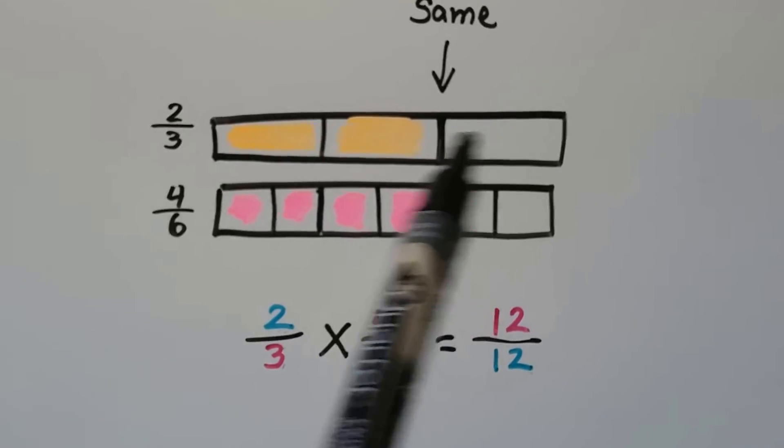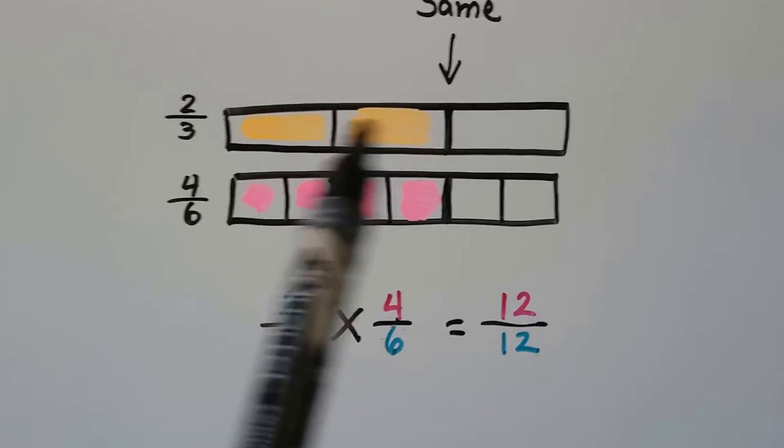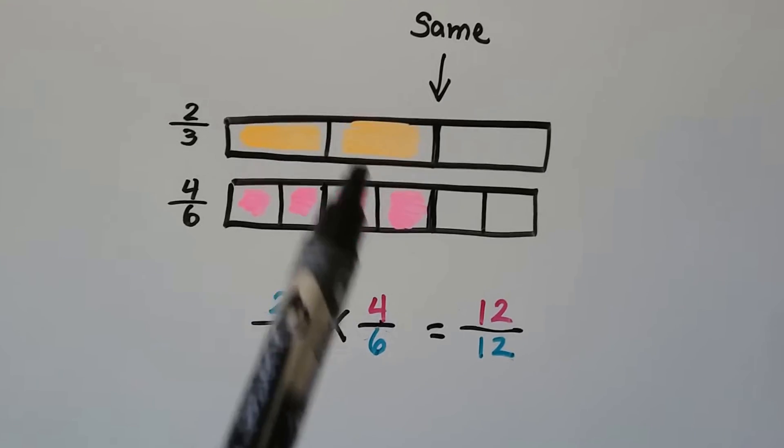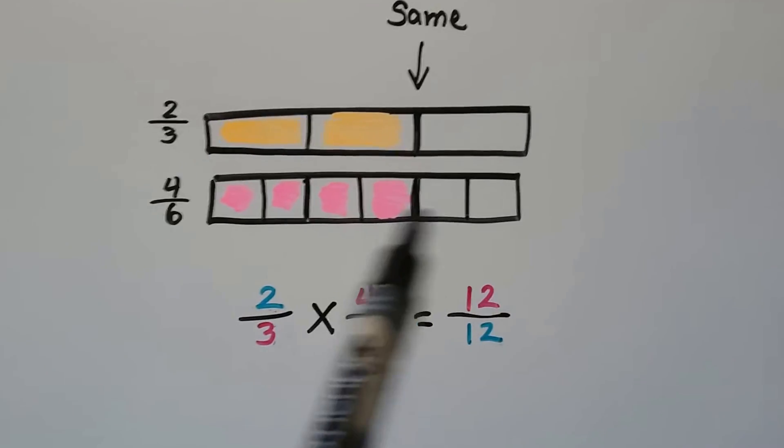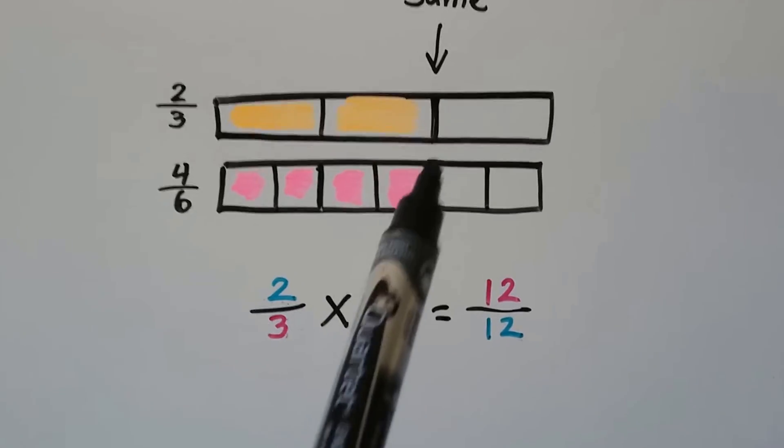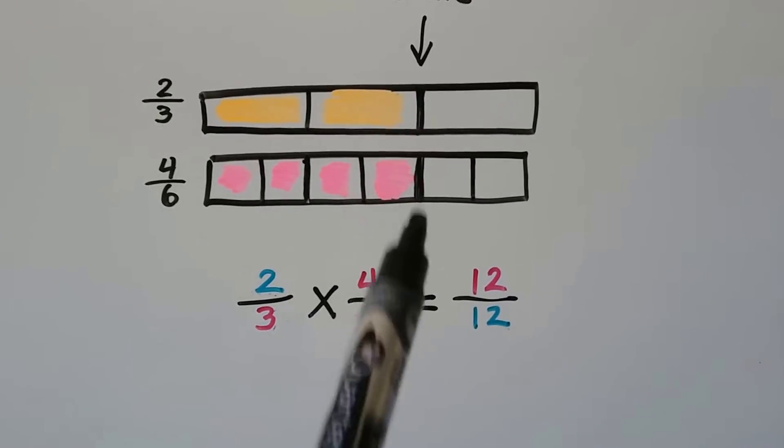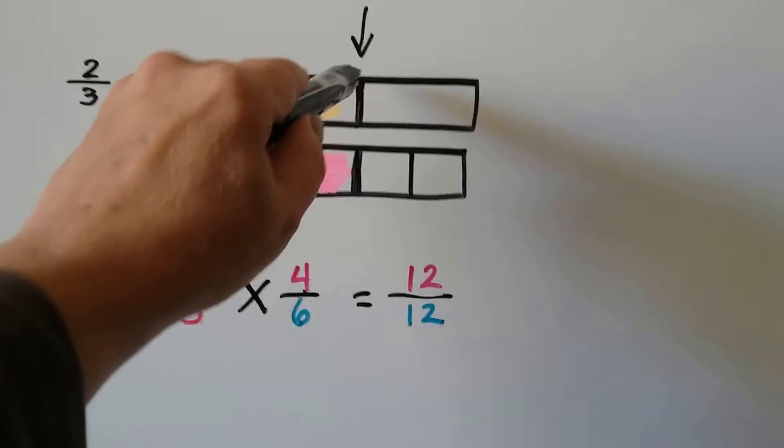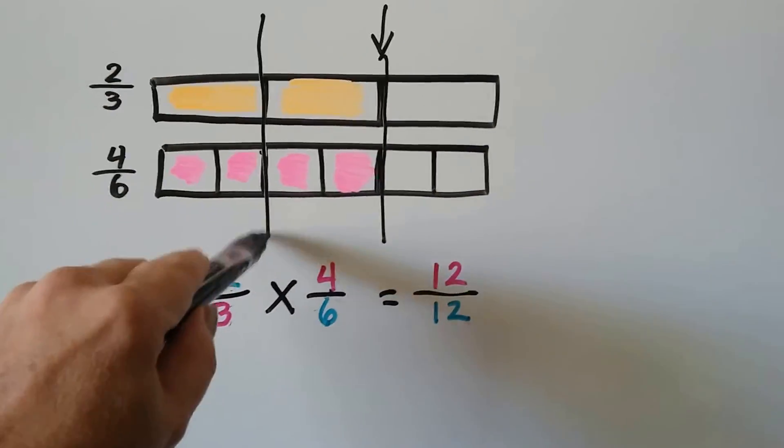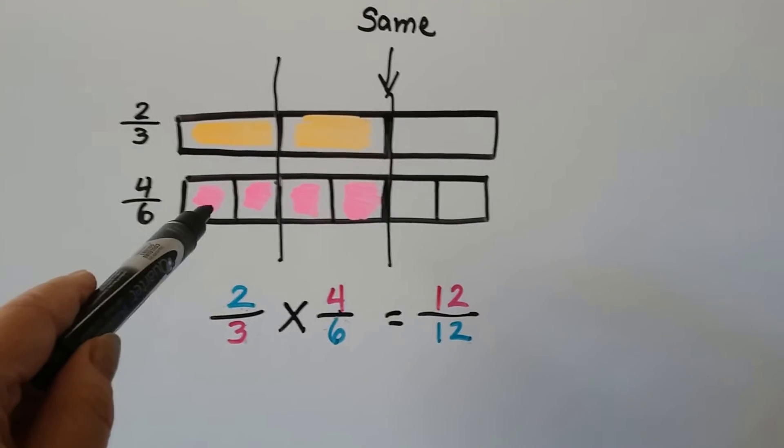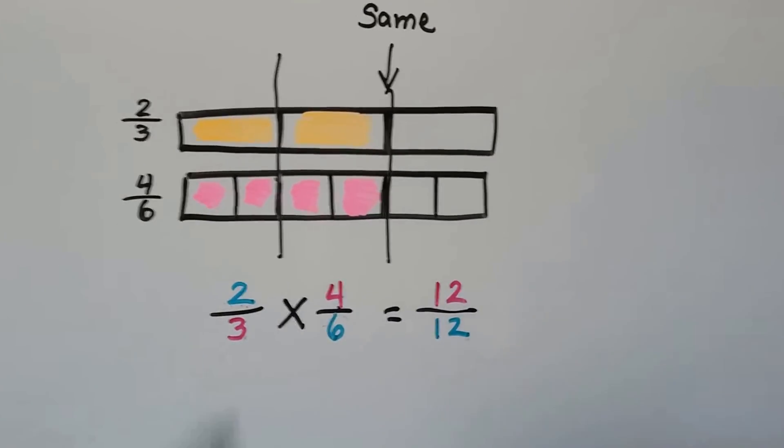We can have two different fractions that represent the same amount. If we have a candy bar split into three pieces and we have two of them, that's two-thirds. If we split the same size candy bar into six pieces and take four pieces, that was the same amount as the two-thirds. This line is the same. Even the one-third is the same. One-third would be the same as two-sixths.